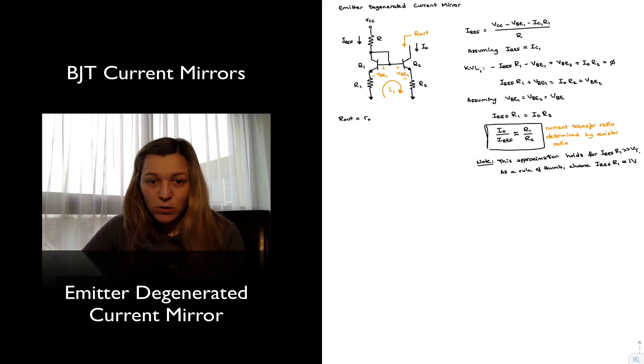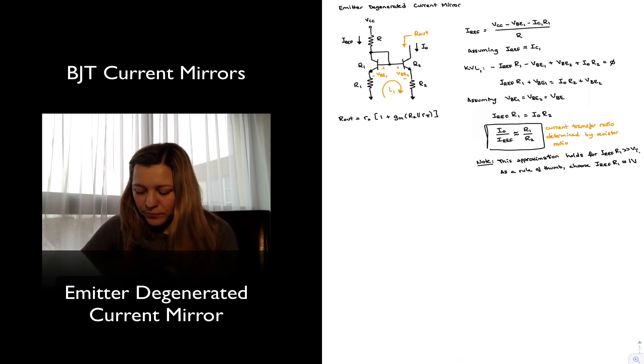And so we won't do the full derivation, but we'll write out the result, and it's that Rout is equal to little r_o times 1 plus gm times R2 in parallel with Rpi. Rpi being beta times little r_E, and this will be Rpi2.